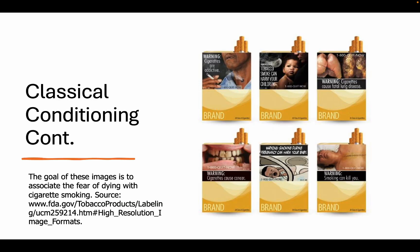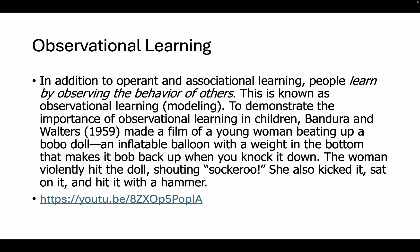Another way companies may utilize learning from association is through advertising imagery. As you can see in the figure to the right, the goal of these images is to associate the fear of potentially dying or negative health consequences with cigarette smoking — trying to allow the individual to associate that cigarettes are probably not a good long-term play for their overall health. But classical conditioning could also be used to benefit a brand, like with Red Robin and 'Yum.'